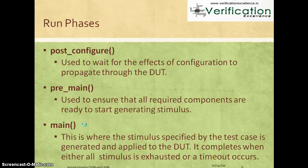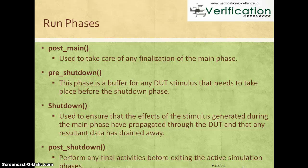The main phase is the most important — you will mostly use it to start your sequences or stimulus generators. This is where the stimulus specified by the test case is actually applied to the DUT. The main phase will consume significant simulation time because DUT interface protocols are time-consuming, and depending on how many transactions or sequence items you need, it will consume a lot of time. Once the time-consuming part of stimulus is over, you can do finalization in the post-main phase. The shutdown phase ensures that the stimulus generator has prepared the DUT and all resultant data has drained away.